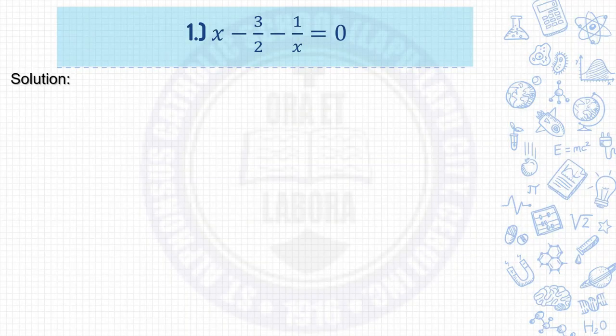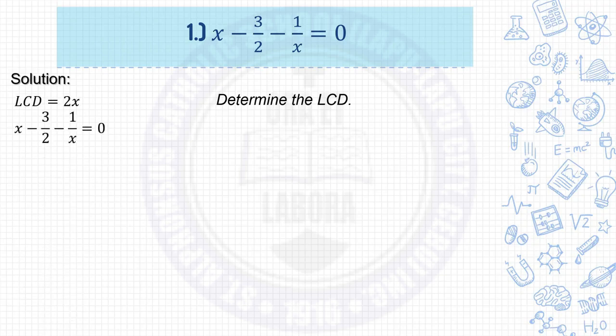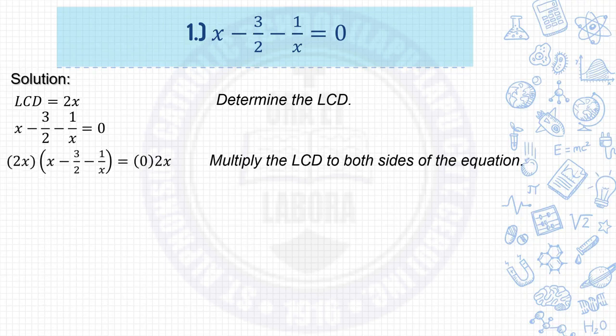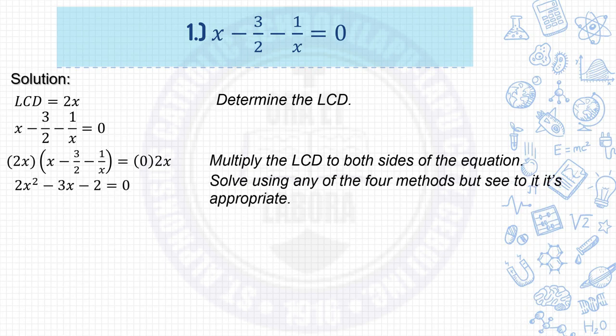Rule 1: x minus 3 over 2 minus 1 over x equals 0. First, determine the LCD. In 2 and x, the LCD is 2x. Copy the given, then multiply the LCD to both sides of the equation. It will become 2x times quantity x minus 3 over 2 minus 1 over x equals 0 times 2x. Simplify and solve using any of the four methods. The general form of the equation will be 2x squared minus 3x minus 2 equals 0.